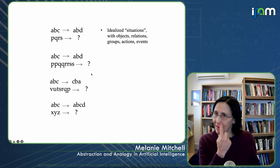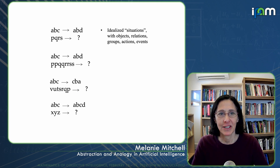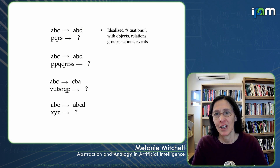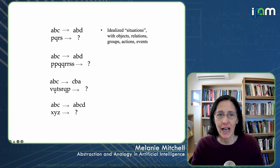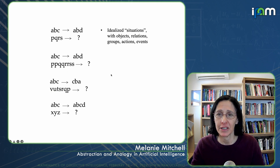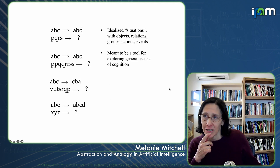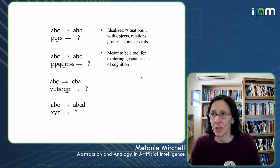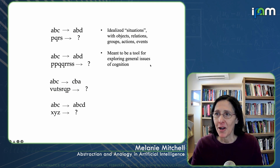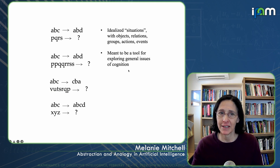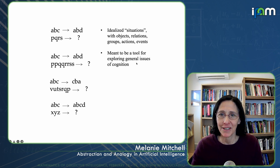The idea is that this is an idealized domain in which situations are represented by letter strings that have objects, relationships, groups, actions, and events, in which a perceiver has to make sense of not only the situation but also the similarities or analogies between different situations. This is meant to be a tool for exploring general issues of cognition. My PhD project working with Hofstadter was to build a program that could solve such analogies using this idea of collective information processing inspired by complex systems in nature.